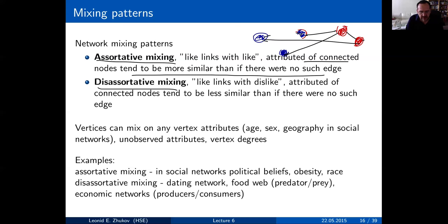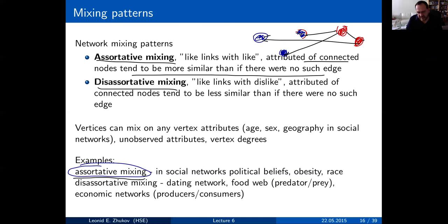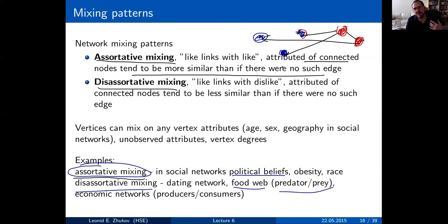By 'color' I mean really any attribute — location, sex, age, income, etc. Assortative mixing, where nodes with similar properties connect to each other, is very common in social networks: political beliefs, age, race, etc. Disassortative mixing occurs in food webs (predator-prey), economics networks (producers and consumers), and financial networks (banks giving loans and people receiving them).